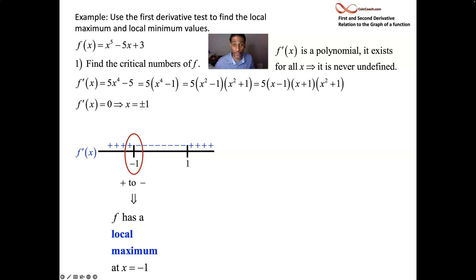And then look at the other critical number. You go from negative to positive on your first derivative. You go from decreasing function to increasing function. That's got to be a local minimum. We did it. First derivative test.